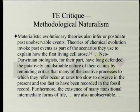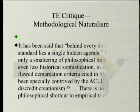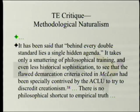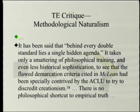Furthermore, the existence of many transitional intermediate forms of life are also unobservable. As has been said, behind every double standard lies a single hidden agenda. It takes only a smattering of philosophical training and even less historical sophistication to see that the flawed demarcation criteria cited in McLean had been specially contrived by the ACLU to try to discredit creationism. There is no philosophical shortcut to empirical truth.